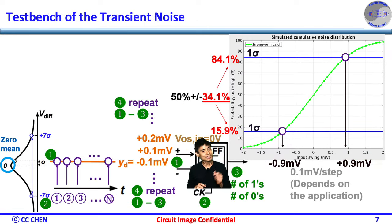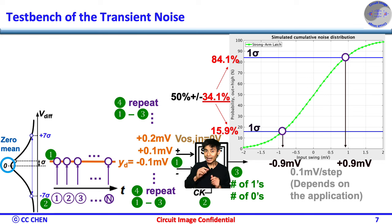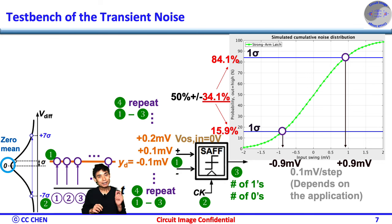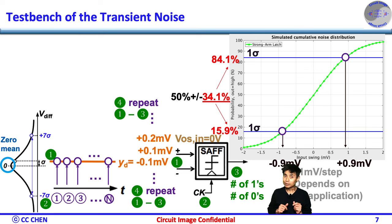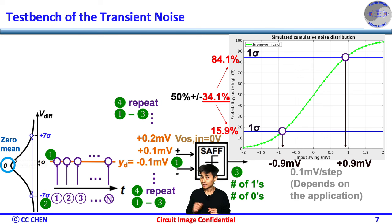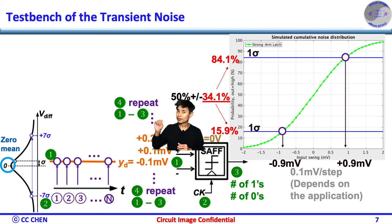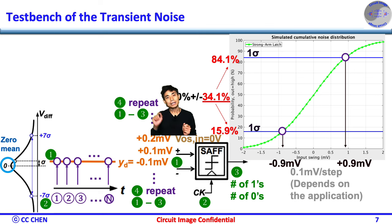Let's talk about the test bench setup of the sampler in the transient noise simulation. First, pick a very small DC static differential input voltage VD equals 0.1 mV and apply it to the sampler input. Second, apply the clock to sample the input and get the output decision of the sampler D-out for at least 10,000 samples. You should know the number of logic 1 at the output D-out should be greater than the number of logic 0 because of the positive 0.1 mV skew voltage. Third, you should be able to get the probability of 1, which should be greater than 50% because of the applied +0.1 mV at the input. Fourth, repeat the same procedure from 1 to 3, but change VD to +0.2 mV, stepping 0.1 mV per step.